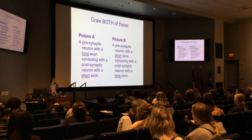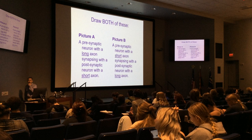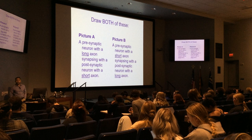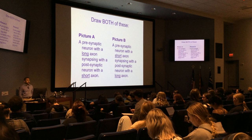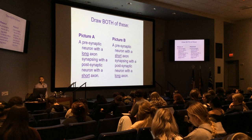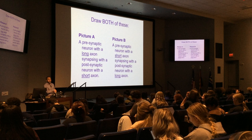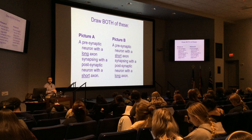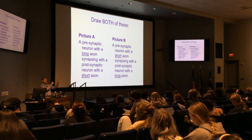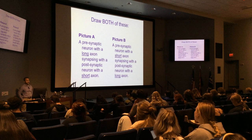I want you to draw these on your paper — draw picture A and picture B. There's going to be some take-home homework from last lecture as well as this lecture. Last lecture I wanted you to characterize visceral and somatic — could you do that by the exam? Maybe these two lectures are a lot of memorization. Draw a presynaptic neuron with a long axon synapsing onto a postsynaptic neuron with a short axon — that's picture A. Then picture B is short, long.